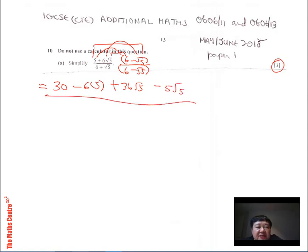Over the bottom, 6 times 6 is 36. Root 5 times negative root 5 will be minus 5. Remember root x times root x gives you x. And the two nearest, the root 5 times 6 gives you 6 root 5.